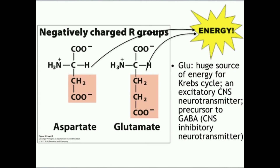These two amino acids are polar and negatively charged: aspartate and glutamate. By far the most important is glutamate. They're both metabolized for energy, but glutamate is also a huge source of energy for the Krebs cycle and is itself a central nervous system excitatory neurotransmitter. Glutamate is also a direct precursor for GABA, the central nervous system inhibitory neurotransmitter, and can be processed into GABA in one enzymatic step.